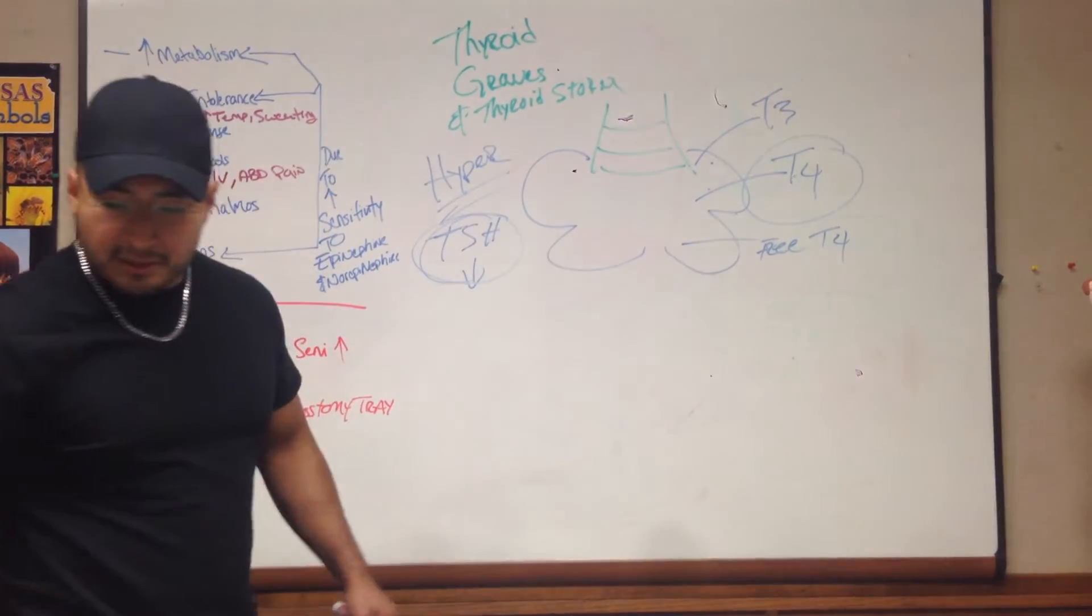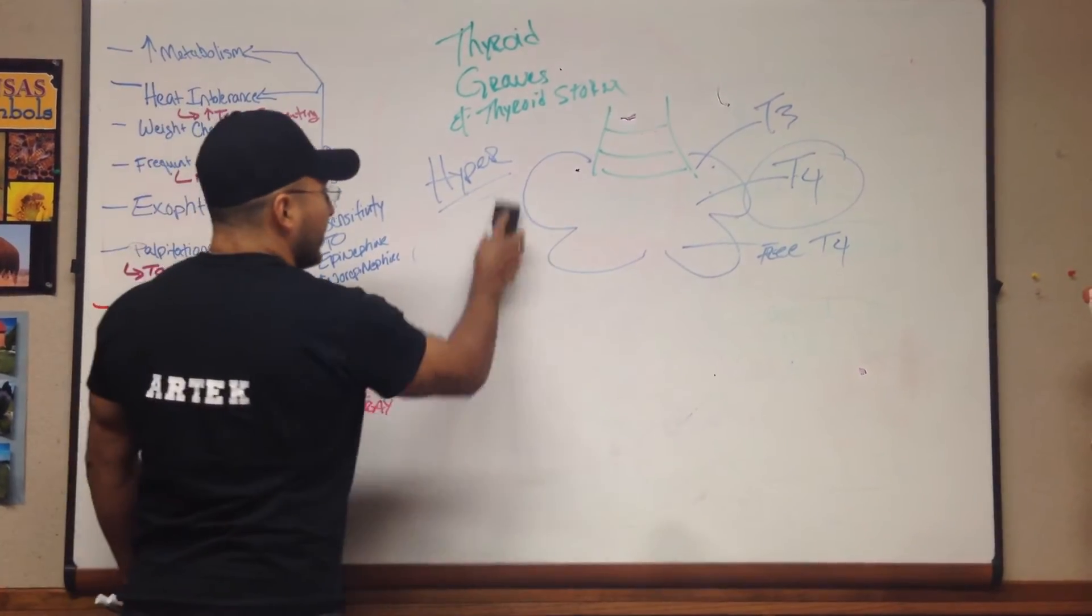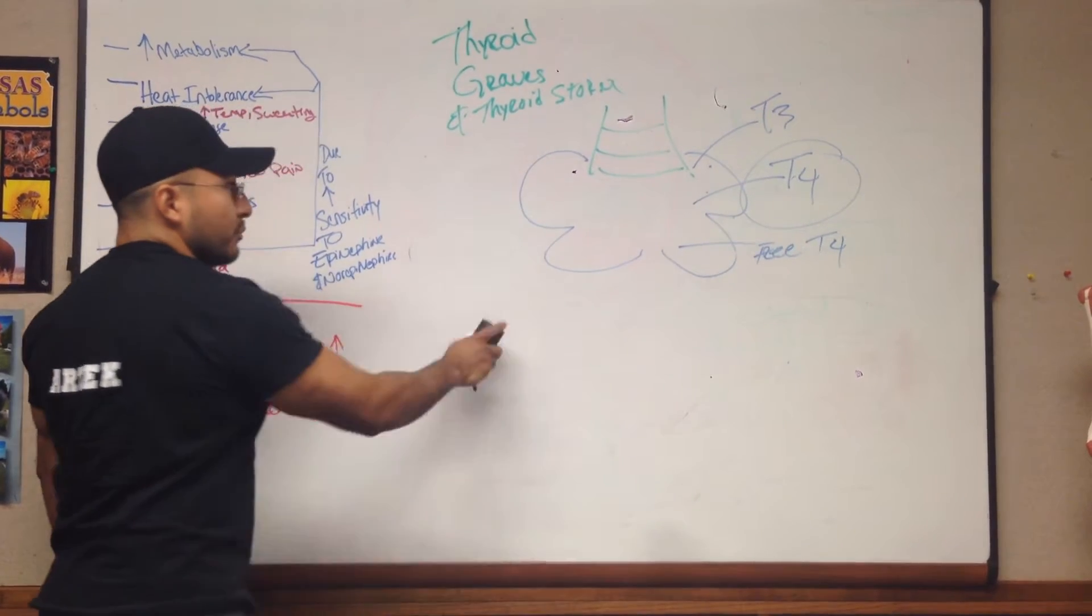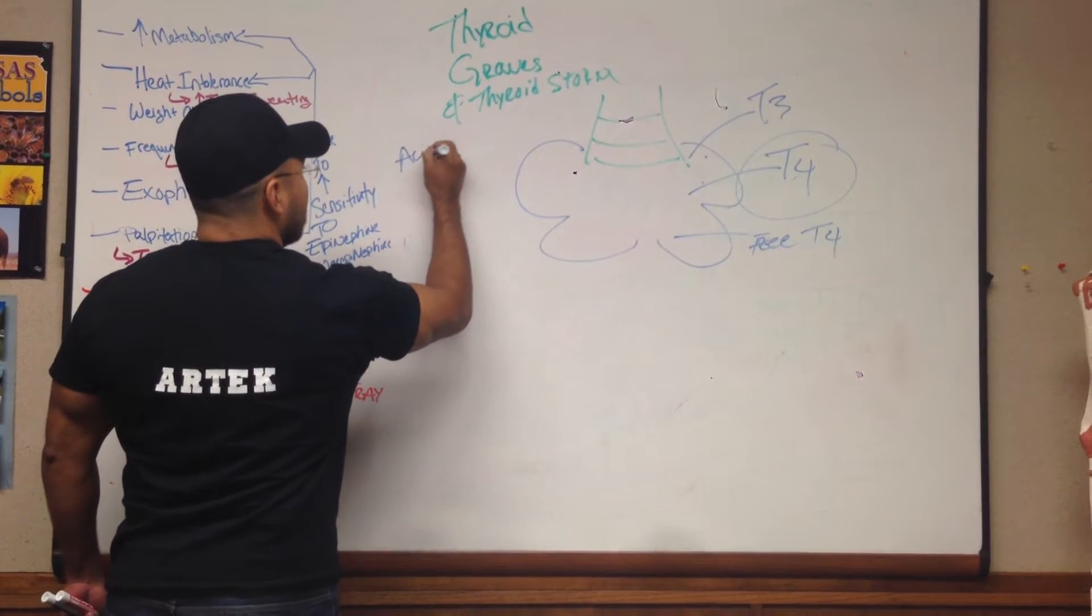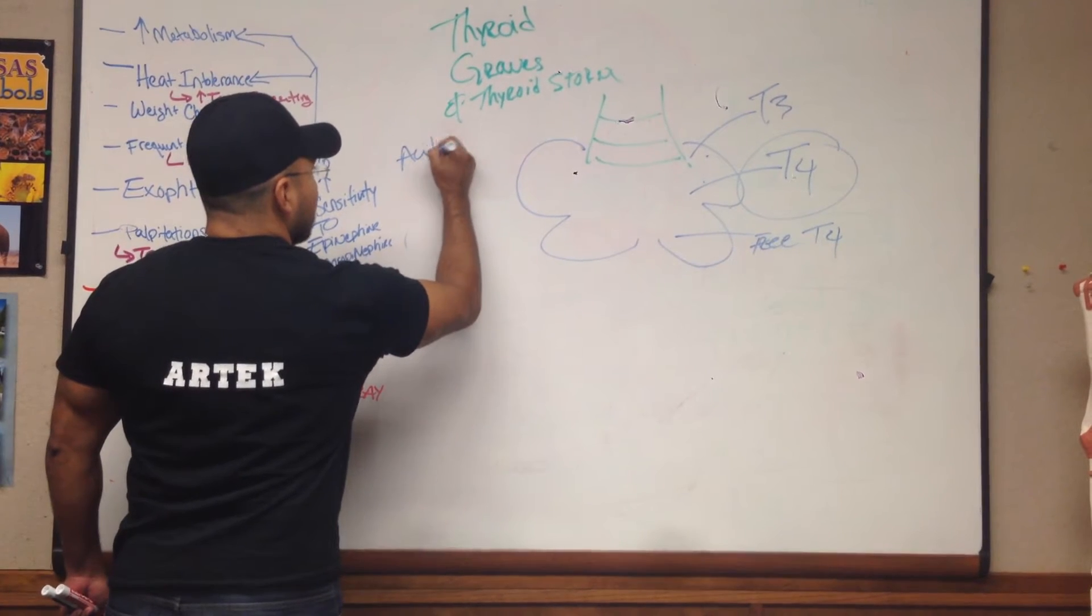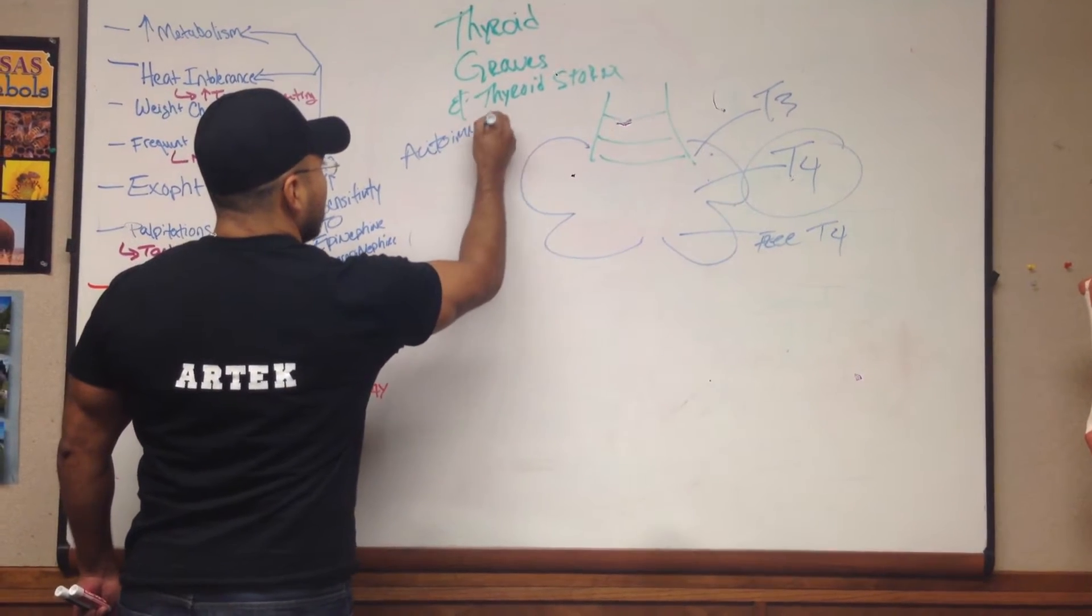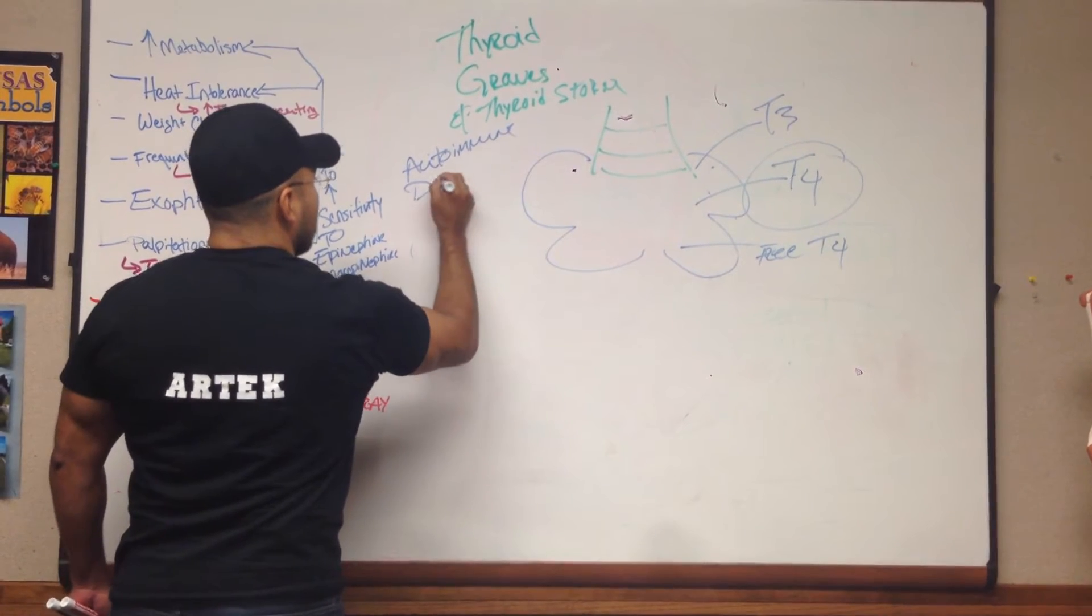Now, in Graves disease, what actually causes your body to secrete or to produce more T3 and T4 is your own immune system. So, this is an autoimmune disorder.